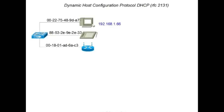In this section we'll explore how local networks are configured. The example we'll use is adding a tablet to an existing home network to understand how it gets an IP address and how it's able to access the broader internet. In our example, we have a PC and a router in a home network connected by an ethernet switch. We're going to add a tablet with the MAC address of 8853 to that network.